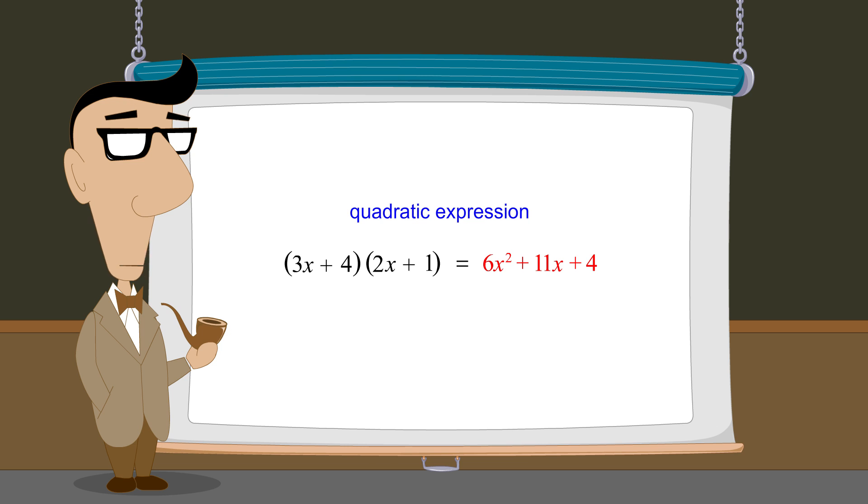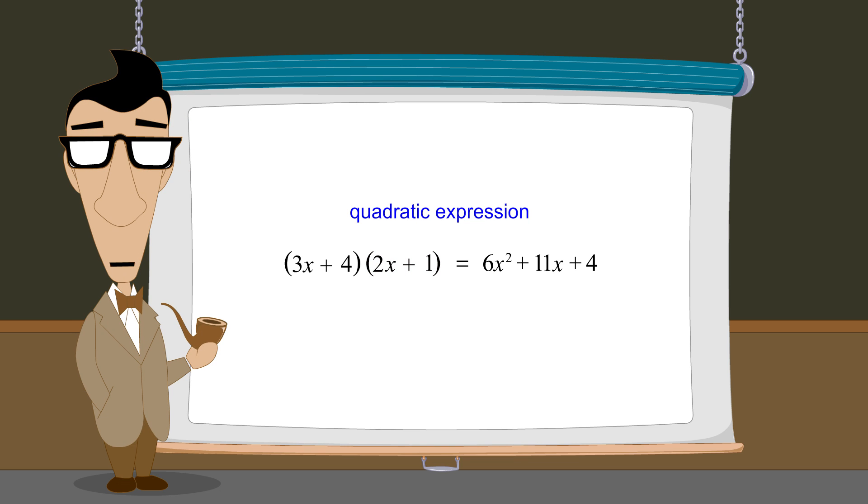Since the quadratic expression 6x-squared plus 11x plus 4 is the product of the two linear expressions 3x plus 4 and 2x plus 1, 3x plus 4 and 2x plus 1 are factors of that quadratic expression.